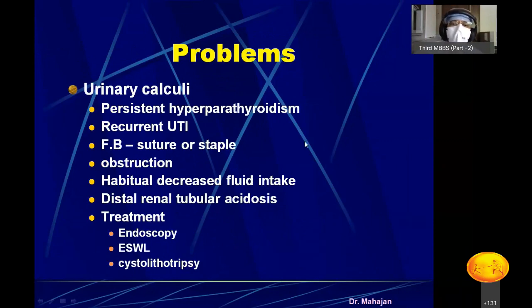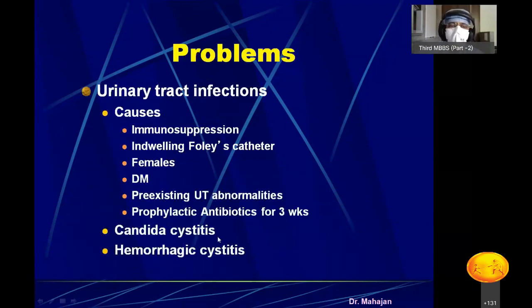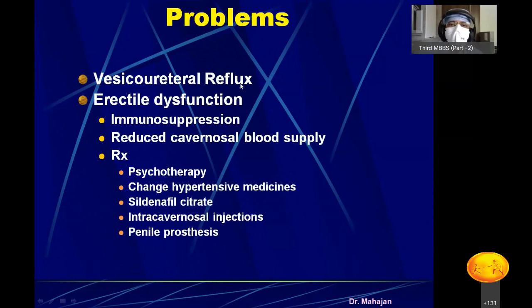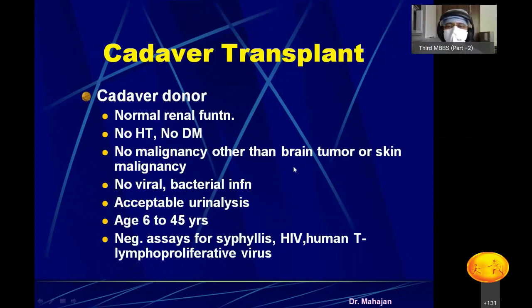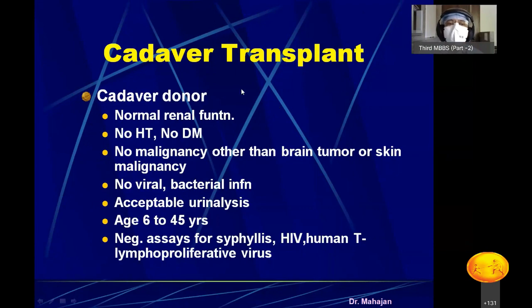Patients can also develop urinary calculi after kidney transplantation, treated endoscopically. Urinary infections are diagnosed by urine culture and treated with antibiotics and antifungal agents. There can also be vesicoureteric reflux or erectile dysfunction due to immunosuppression drugs. Regarding cadaveric transplant — the cadaveric donor is a brain-dead patient, usually after vehicular accident or cerebral conditions. You select a cadaveric donor with normal renal function, no hypertension, no diabetes, no malignancy, and no viral or bacterial infection; then the kidney is transplanted into the recipient.